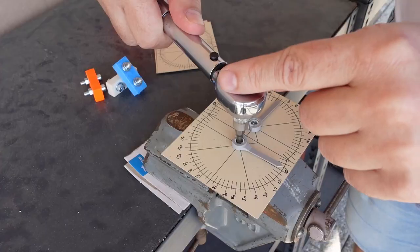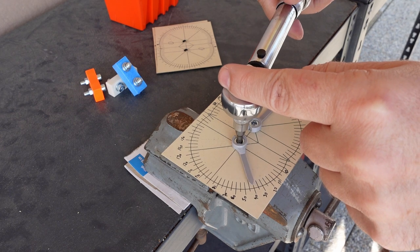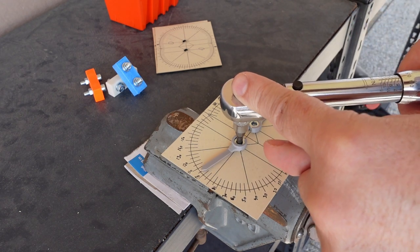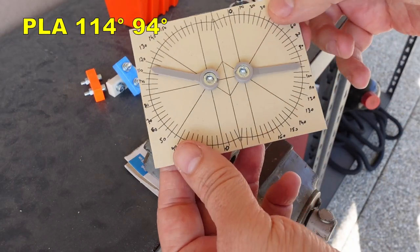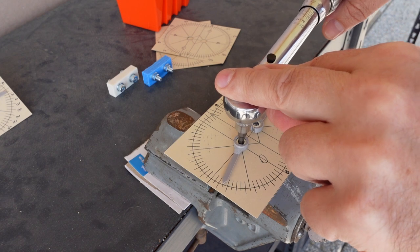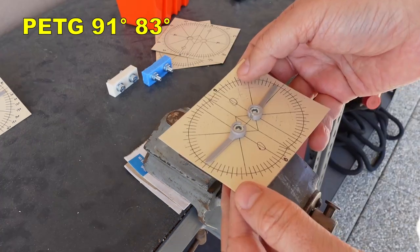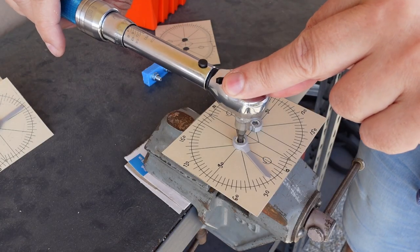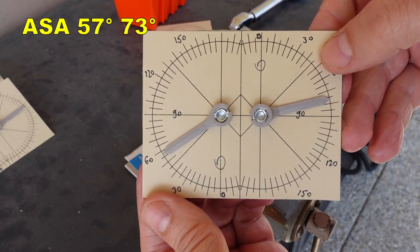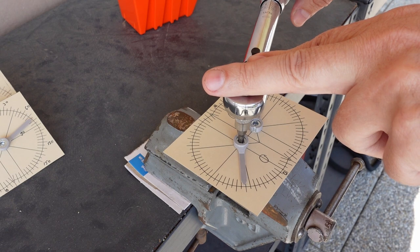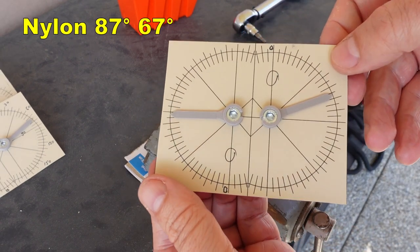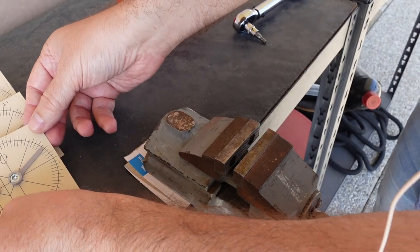And of course the torque test. Wow these bolts are completely loose. PLA, PETG, ASA, nylon. Results after day 4.